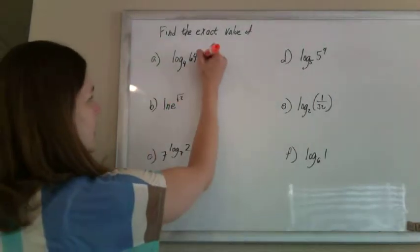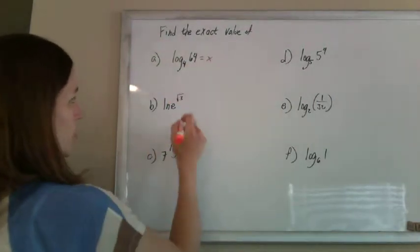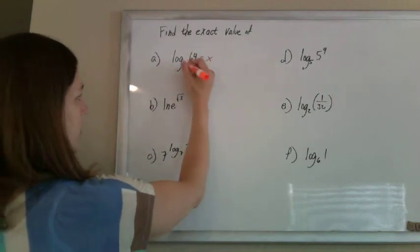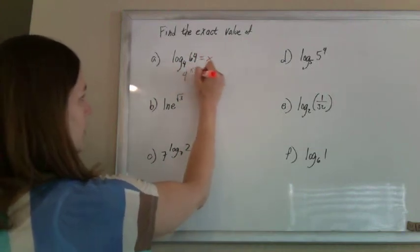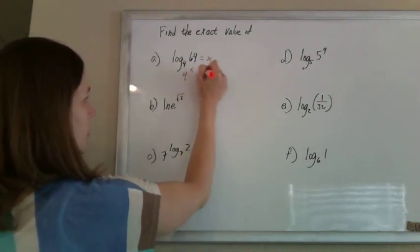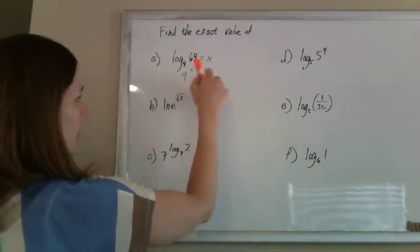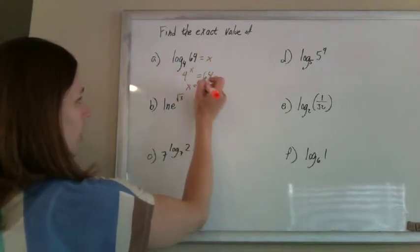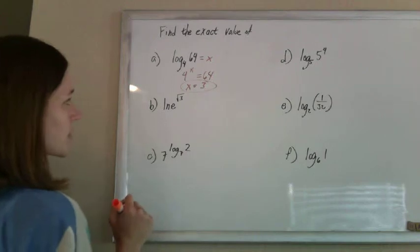Alright, so for these, a lot of times I like to just write these in exponential form. If I'm wondering what this equals, I write it as 4 to the x equals 64. So 4 to what power equals 64? That would be 4 to the 3rd, so x must be 3.